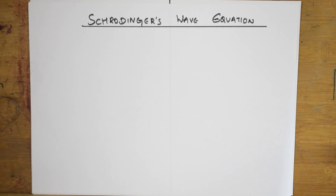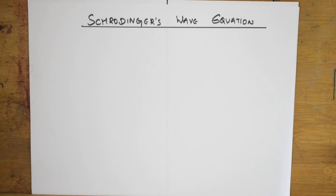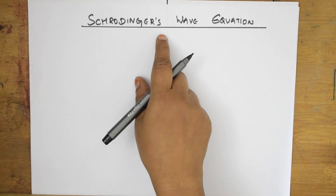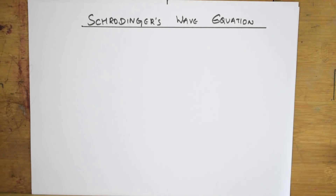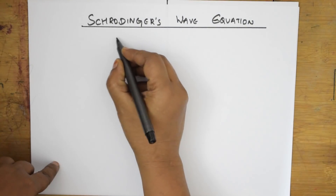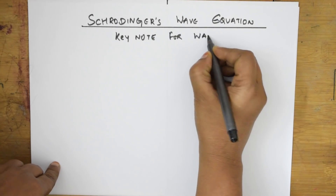Schrödinger was a person who derived an equation named after him. It is a keynote for wave mechanics. For your Grade 11 CBSE there is no derivation required, but I felt that when you derive a particular equation you'll be able to remember it better. So the Schrödinger wave equation — this name was given after the person who discovered it — is a keynote for wave mechanics.